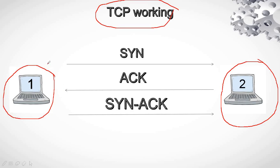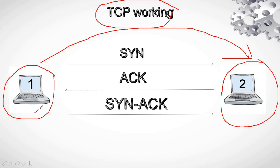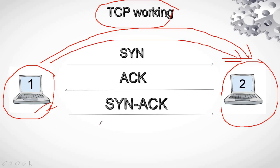Now let's say you want to send a file to your friend's computer by any sort of means, via FTP or anything. Your PC will not just throw the file and send it to the PC at the other end. What will happen is that it will first establish a connection between the two, and this happens by using the Synchronization Acknowledgement Packet manner.